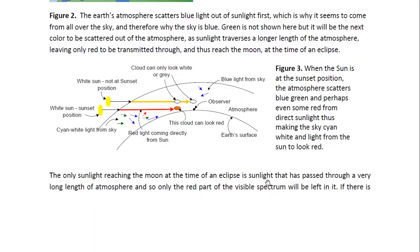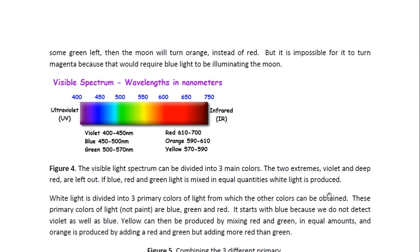Now, the only sunlight reaching the moon at the time of an eclipse is sunlight that has passed through a very long length of atmosphere. And so, only the red part of the visible spectrum will be left in it. And so there will be no green left. And then the moon will turn orange. Well, if there is some green left, then the moon will turn orange instead of red. But it is impossible for it to turn magenta because that would require blue light to be illuminating the moon.